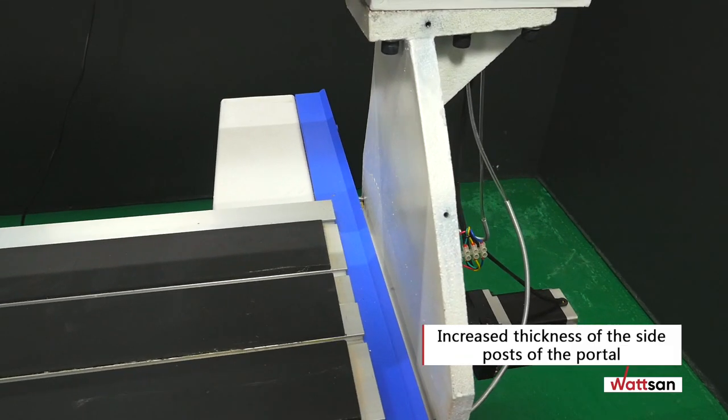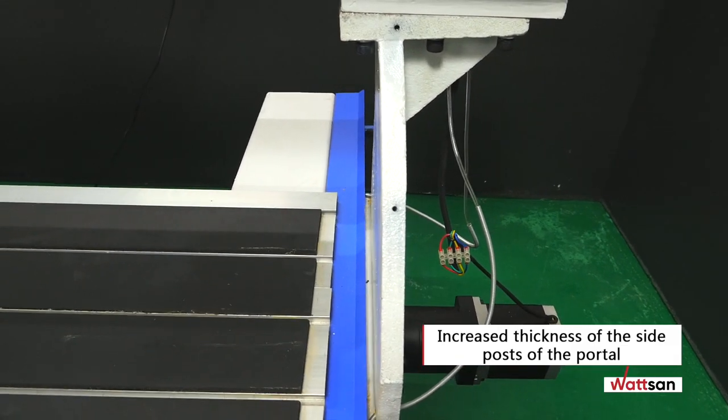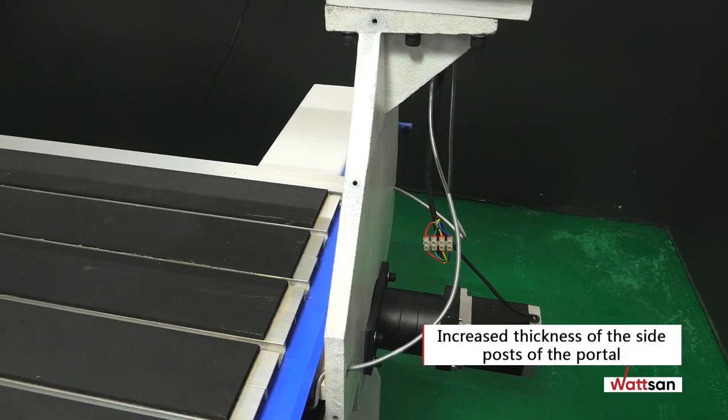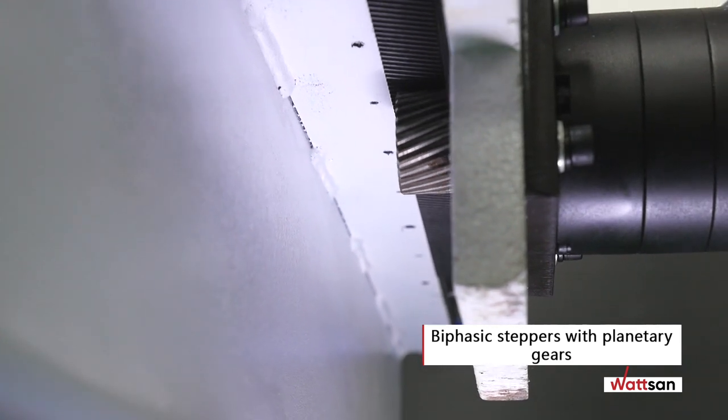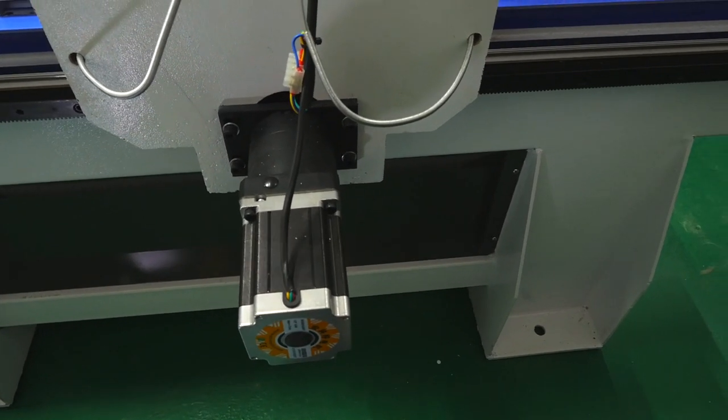The side posts of the portal are made of cast iron and have increased thickness. The portal is driven by two-phase stepper motors in conjunction with Shimpo planetary gears, lead shine drivers.